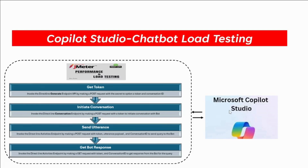So it's important to know how much load the chatbot can handle. In this design, I am using JMeter for load testing, and it will interact with Copilot Studio using the Direct Line API. Essentially, we will simulate user behavior by making different API calls. As you can see in this screenshot, I am making four API calls.